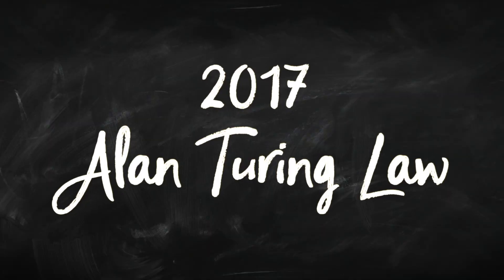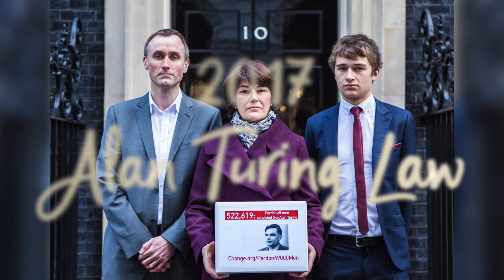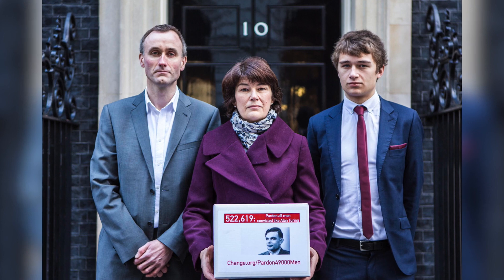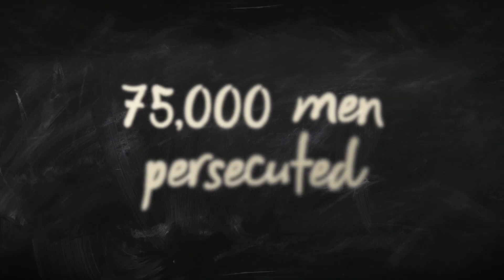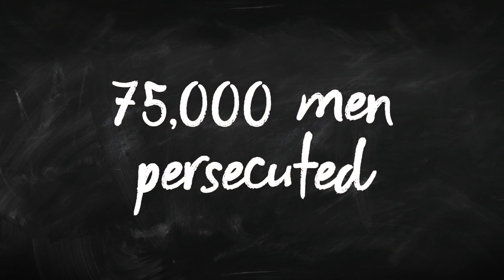In 2009, the then Prime Minister Gordon Brown offers an official apology. A couple of years later, in 2013, the Queen offers a pardon for Alan Turing. And then in 2017, we get the Alan Turing Law — the colloquial name for a law that offered a retrospective pardon for everyone prosecuted under the law against homosexuality. It's estimated there were about 75,000 men persecuted under that law.